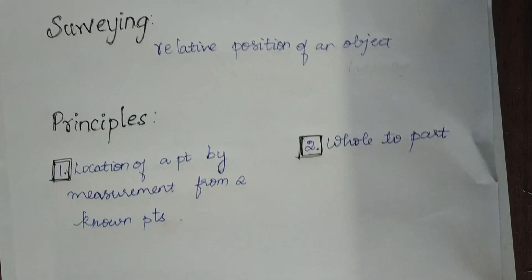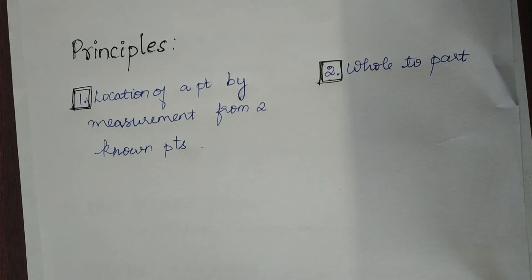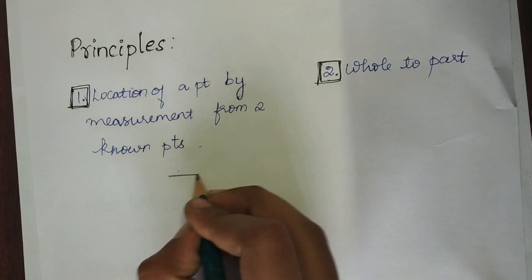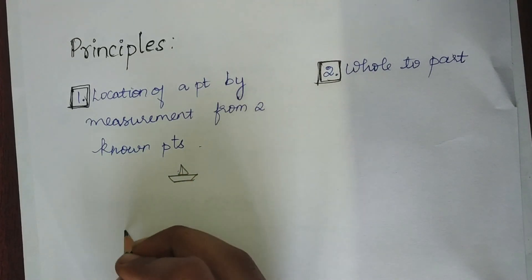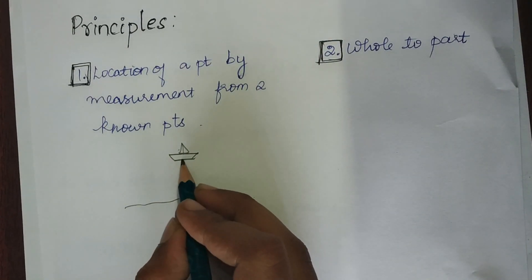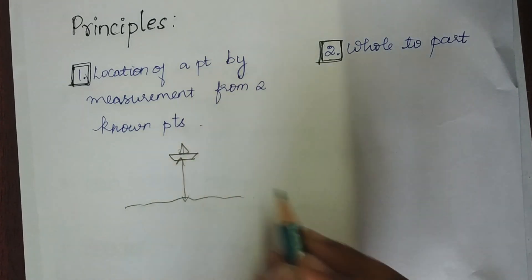Giving a quick example for location of a point by measurement from two known points: consider a ship or a boat in the sea, and this is the shore. You have to find the distance of the ship from the shore.